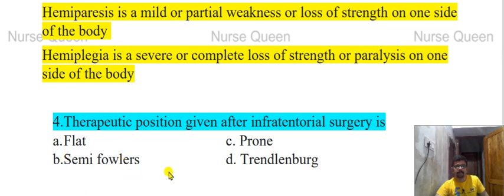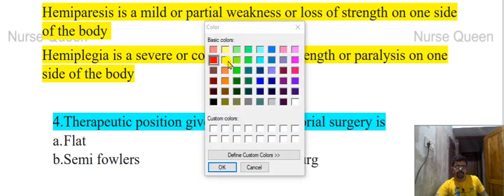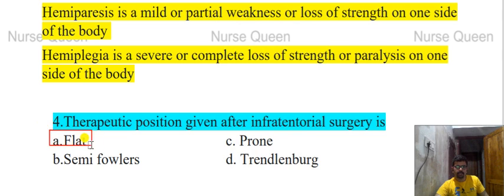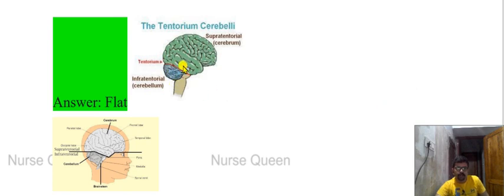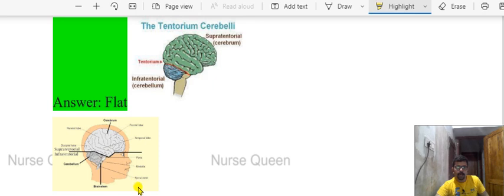Next question: What is the therapeutic position given after infratentorial surgery? Options: flat, semi-fowler's, prone, or Trendelenburg. The correct answer is the flat position. The tentorium cerebelli is the middle part between the supratentorial and the infratentorial region of the brain.